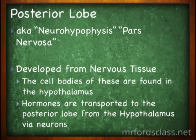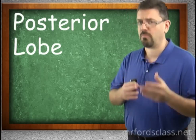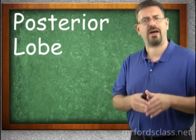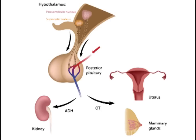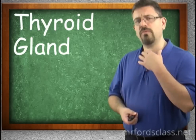The posterior lobe, the back lobe, also known as the neurohypophysis or pars nervosa, is developed from nervous tissue. The cell bodies of these neurons are found in the hypothalamus. The posterior lobe is nervous tissue, and neurons have cell bodies — in this case, the cell body is actually located in the hypothalamus. It creates the hormones in the hypothalamus and sends them down the nervous tissue into the posterior lobe. The two important hormones are oxytocin and antidiuretic hormone.